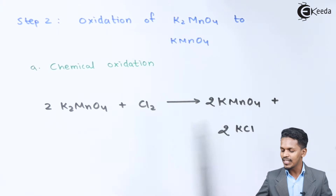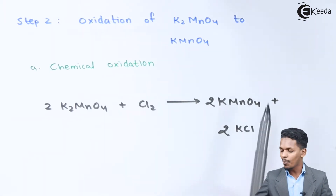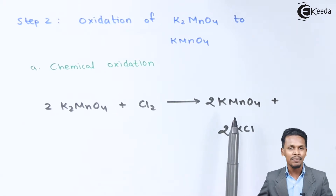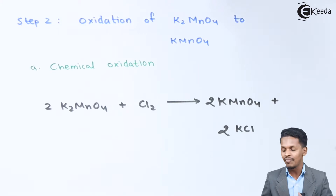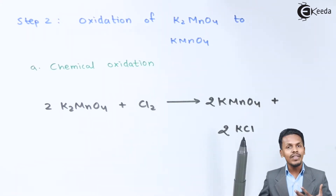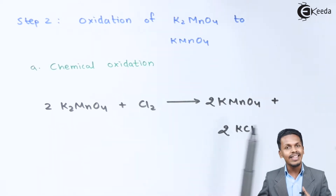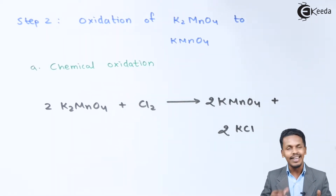By doing the oxidation of K2MnO4, we can obtain KMnO4 (potassium permanganate). However, chemical oxidation is not very efficient — in fact, only one-third of the reagents used can give us KMnO4, and that's the reason its efficiency is very much less.